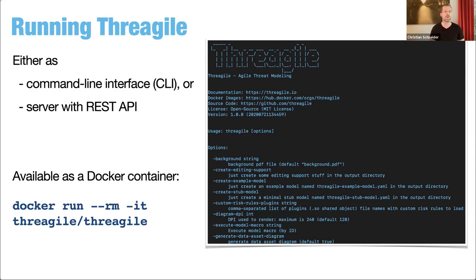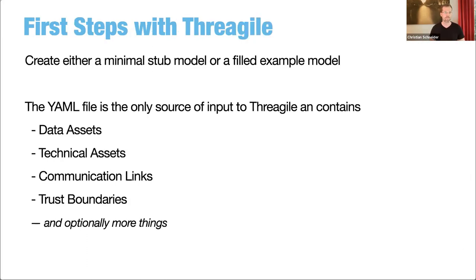You can work on the model file and generate output via the command line interface, or start it as a REST server with a REST API if you want it running remotely on your premises. The first steps when working with Threagile: either take the full example model to play with, or just the minimal stub model — a very simple model containing just the minimum input — which you can then use as a foundation for adding more data assets, technical assets, communication links, and trust boundaries.